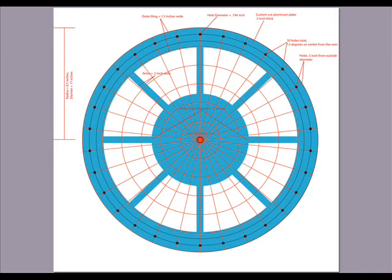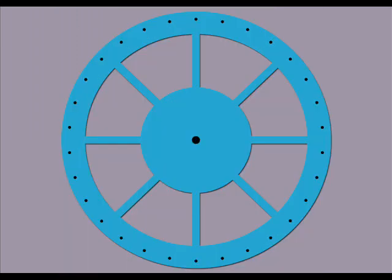The stator's dimensions were determined after all 15 coils were wound and situated in a circle. The stator's plans were drawn in Adobe Illustrator. The stator is where the coils are attached with zip ties. It is stationary while operating the alternator. The finished piece is one half inch thick, custom cut aluminum.